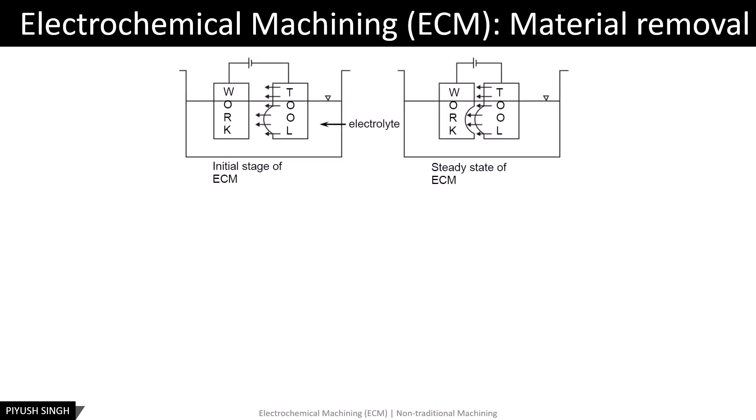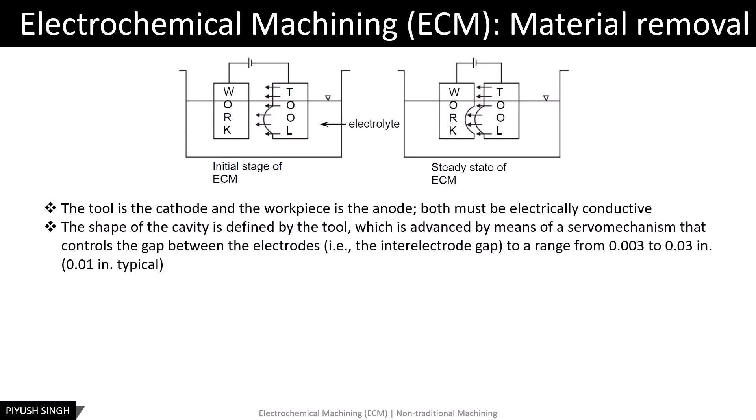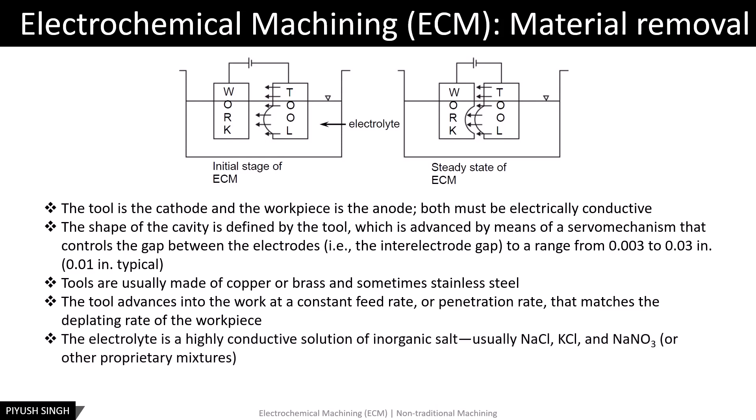The work and the tool are maintained at some gap with the electrolyte flowing between the two. The shape of the cavity is determined by the tool, and the cavity produced is the female mating image of the tool shape. The tool, which may be in either solid or tubular form, is generally made of brass, copper, bronze, or stainless steel. The tool is advanced at a given feed rate depending on the depleting rate of the workpiece. The electrolyte, which is usually a solution of inorganic salt like sodium chloride or potassium chloride, provides a highly conductive medium for the flow of electricity between the electrodes.